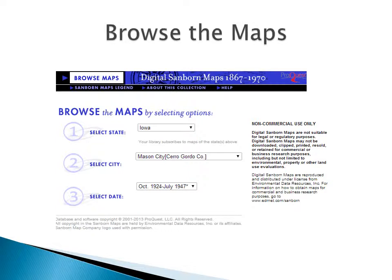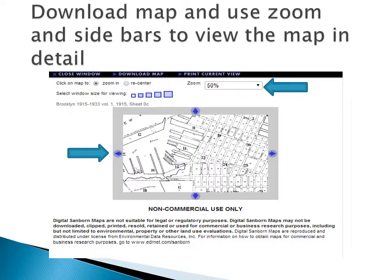Select State in the drop-down, then select City in the drop-down, and select the Date of the map you wish to view. Download the map and use the zoom and the side bars to view the map in detail.